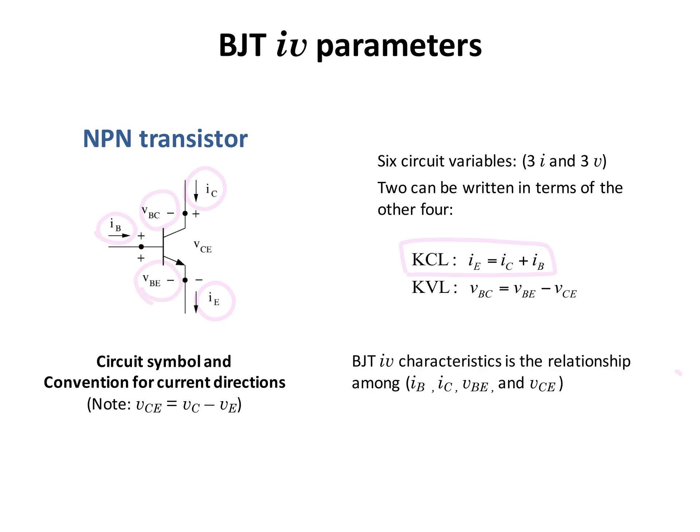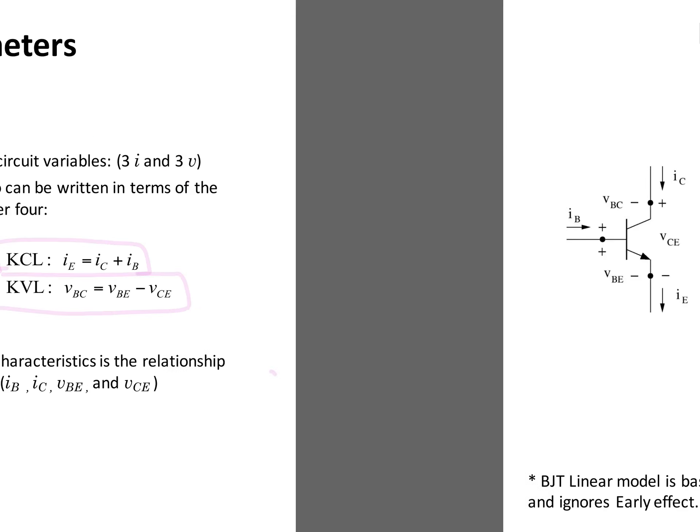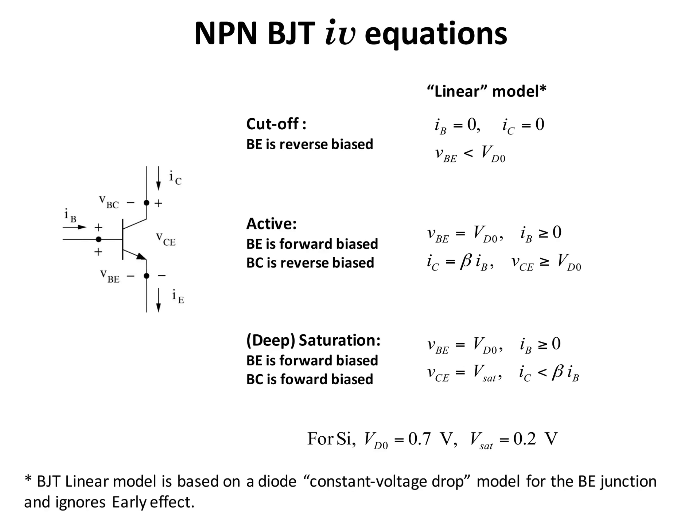So V_BC equals V_BE minus V_CE is what we get from KVL. The BJT IV characteristics describe the relationship among I_base, I_collector, V_base-emitter, and V_collector-emitter. When we write V_CE, we mean V_collector minus V_emitter.